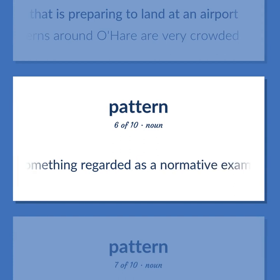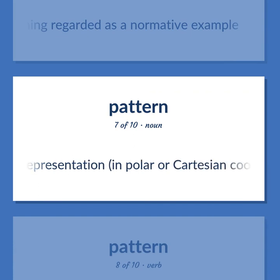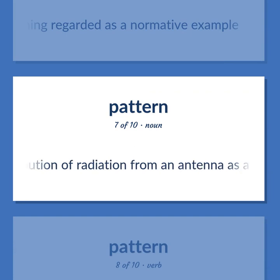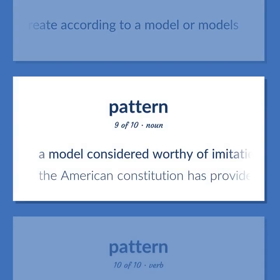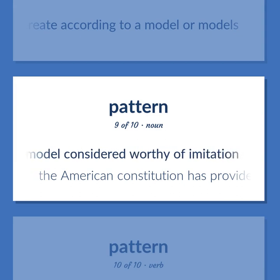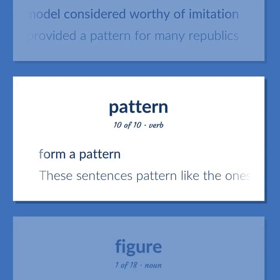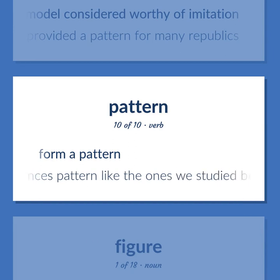Pattern: something regarded as a normative example. Graphical representation, in polar or Cartesian coordinates, of the spatial distribution of radiation from an antenna as a function of angle. Plan or create according to a model or models. A model considered worthy of imitation — 'The American constitution has provided a pattern for many republics.' Form a pattern — 'These sentences pattern like the ones we studied before.'